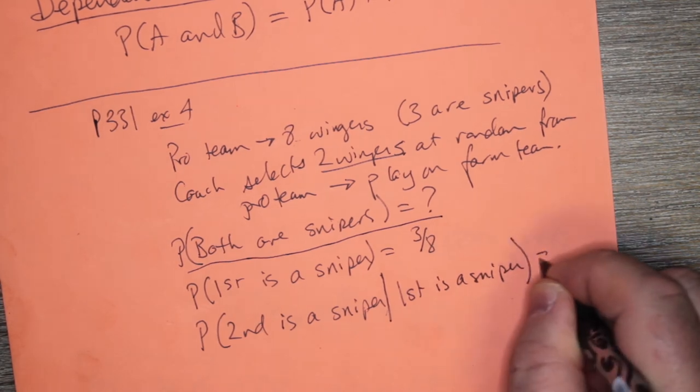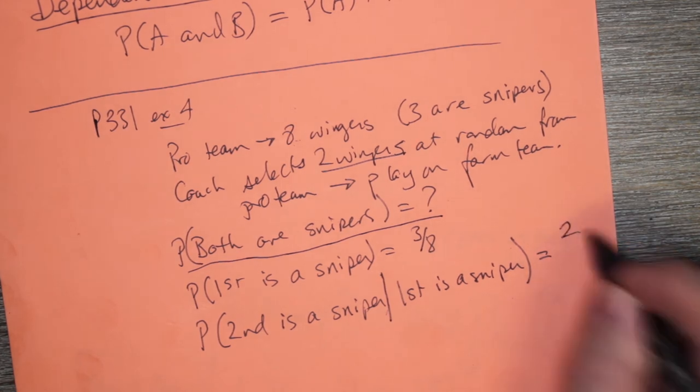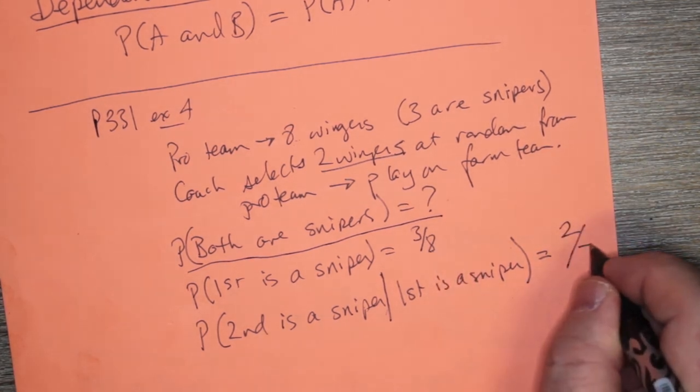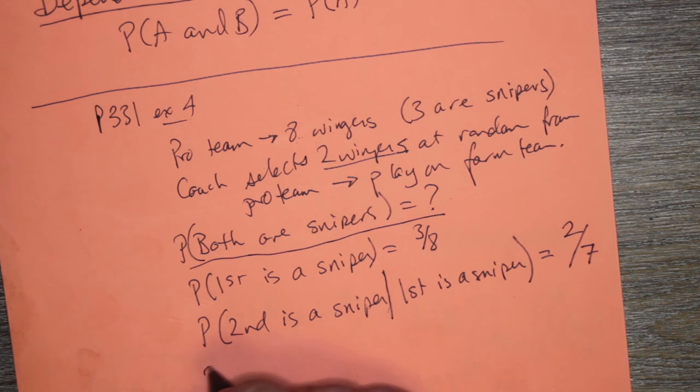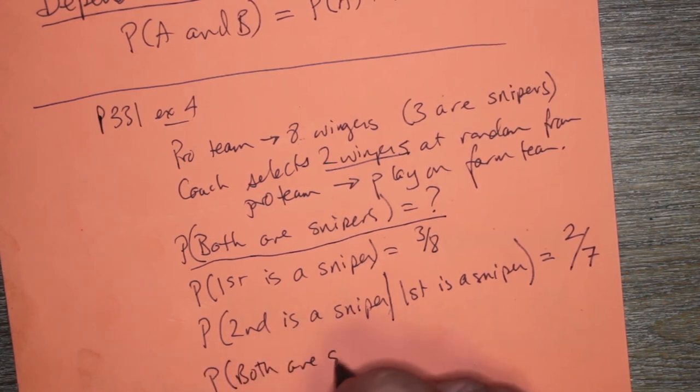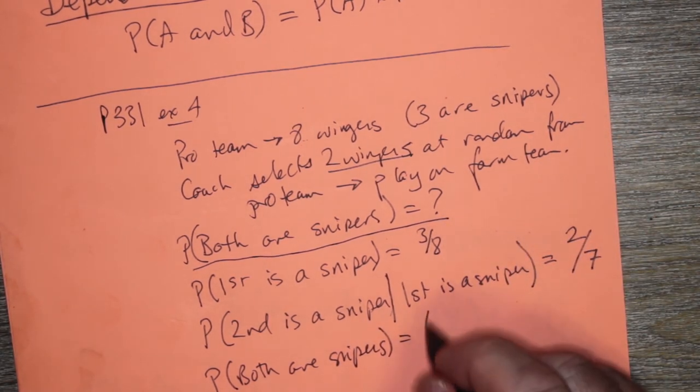Right? Well, if the first was a sniper, then that means that we have two snipers remaining, and we already picked a winger, so that's seven wingers remaining, two out of seven. And so, the probability that both are snipers is equal to three over eight times two over seven.